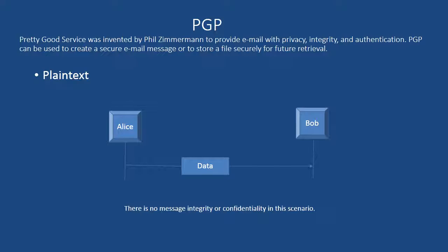In order to understand PGP, let's discuss a simple scenario and then move on to more complex scenarios. First, let's discuss the plain text scenario, which is the simplest scenario in which Alice, who is the sender, composes the message and sends it to Bob, who is the receiver.